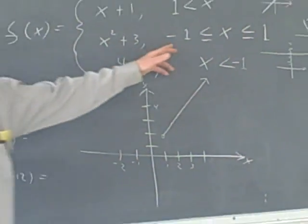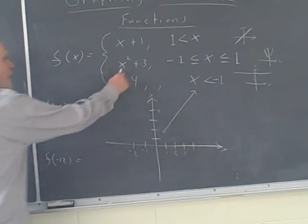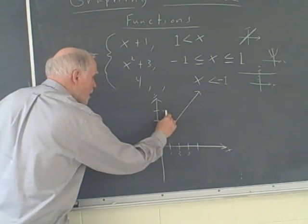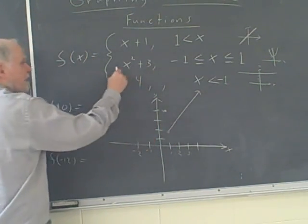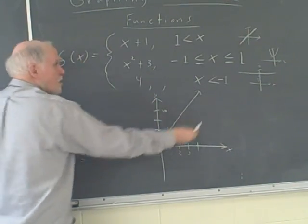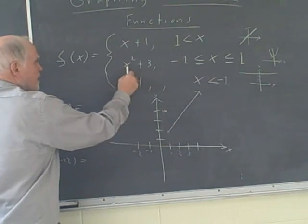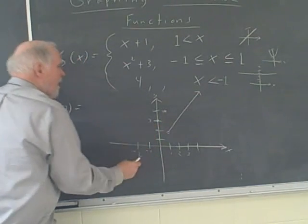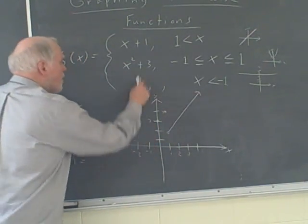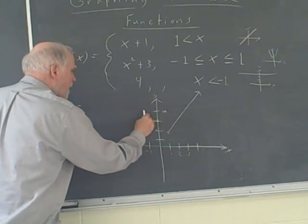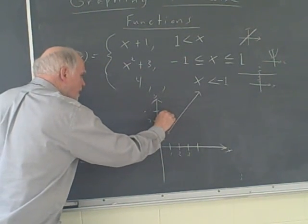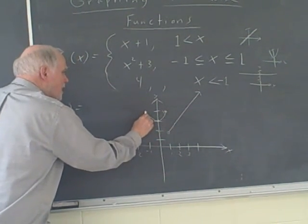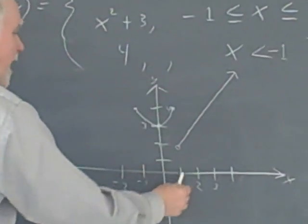Between negative 1 and 1, including those endpoints, we have x squared plus 3. When I put in 1, I get 4 — solid point up at 4. When I put in 0, I get 3 down here. When I put in negative 1, I get 4 again. These are solid points, and it looks like a u — but only the part between negative 1 and 1.